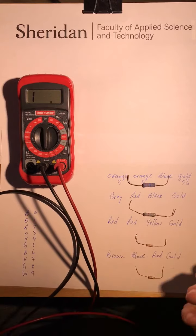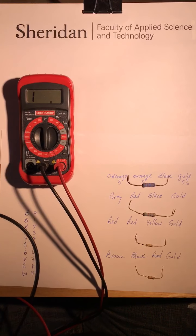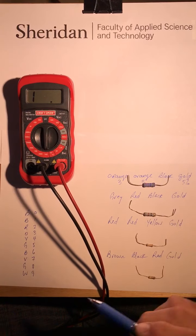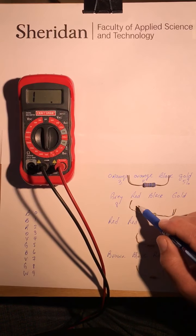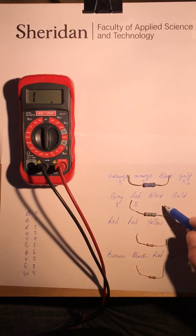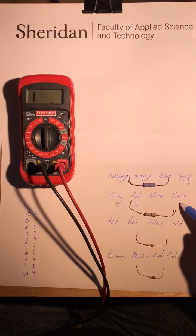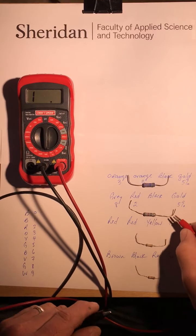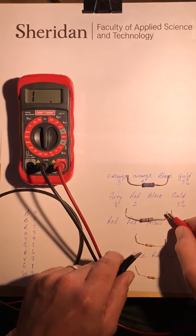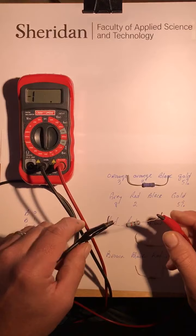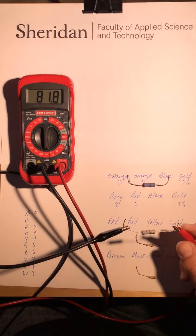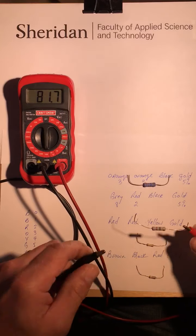The next one I have is gray, red, black, gold. Gray is eight, red is two, black - no multiplier - so 82, gold is five percent. This should be around 82 ohms. I'm gonna leave that on the same setting, put my meter back on that, and we've got 81.8 ohms, well within range.